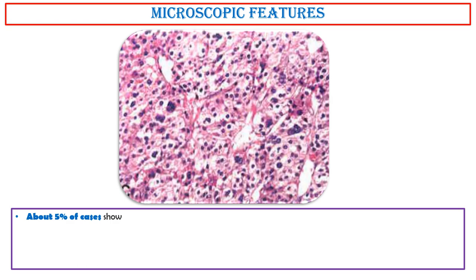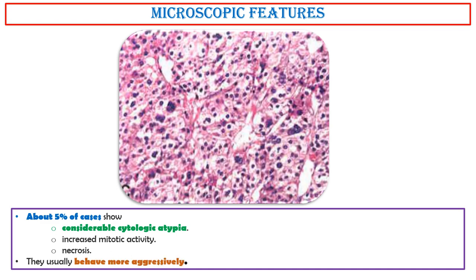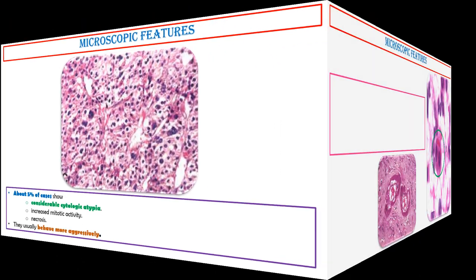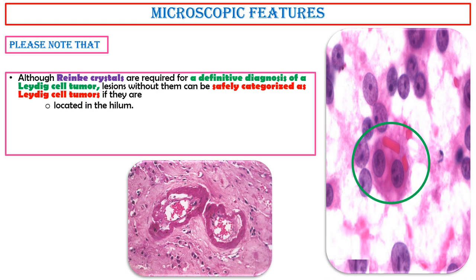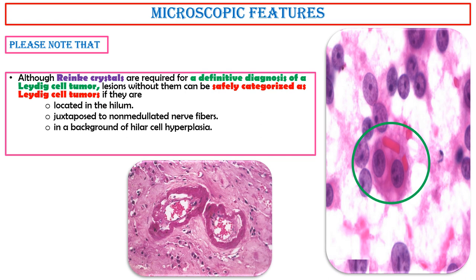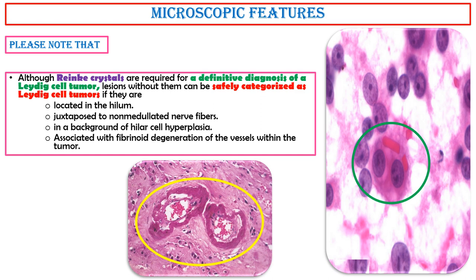About 5% of cases show considerable cytologic atypia, increased mitotic activity, and necrosis; they usually behave more aggressively. Please note that although Reinke crystals are required for a definitive diagnosis of a Leydig cell tumor, lesions without them can be safely categorized as Leydig cell tumors if they are located in the hilum, adjacent to non-medullated nerve fibers, in a background of Hila cell hyperplasia associated with fibrinoid degeneration of the vessels within the tumor.